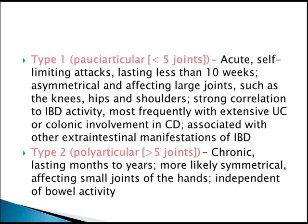Type 2 peripheral arthritis involves more than 5 joints — polyarticular — and is chronic, lasting months to years. It is more likely symmetrical and affects the small joints of the hands, and is independent of bowel activity.